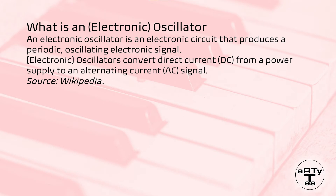What is a voltage controlled oscillator anyway? Well, it is a kind of an electronic oscillator. According to Wikipedia, an electronic oscillator is an electronic circuit that produces a periodic oscillating electronic signal. Oscillators convert direct current or DC from a power supply to an alternating current or AC signal. Long story short, it is an electronic circuit that converts DC to AC.